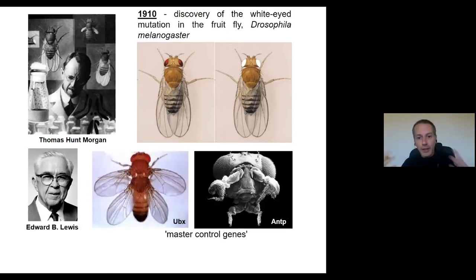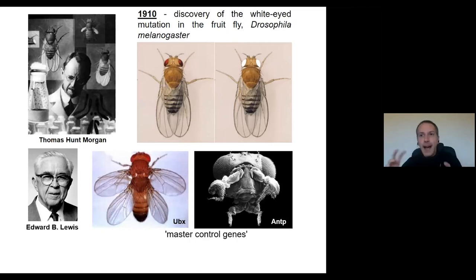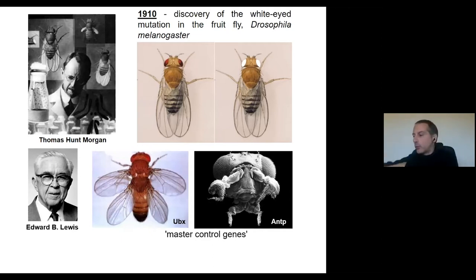Much more work was done using mutations to understand the role of that code. A considerable part of the DNA — actually the minority of the DNA — encodes proteins. It's called coding DNA, and those are the active parts of the DNA. They encode proteins because they will encode amino acids that together will generate a protein, and a protein will do things in cells.